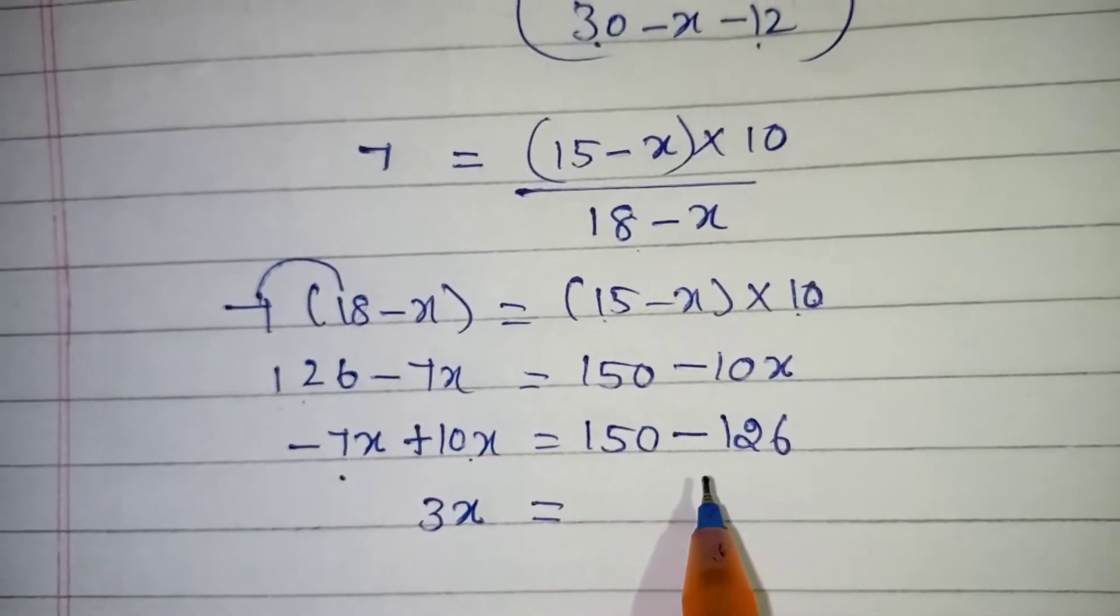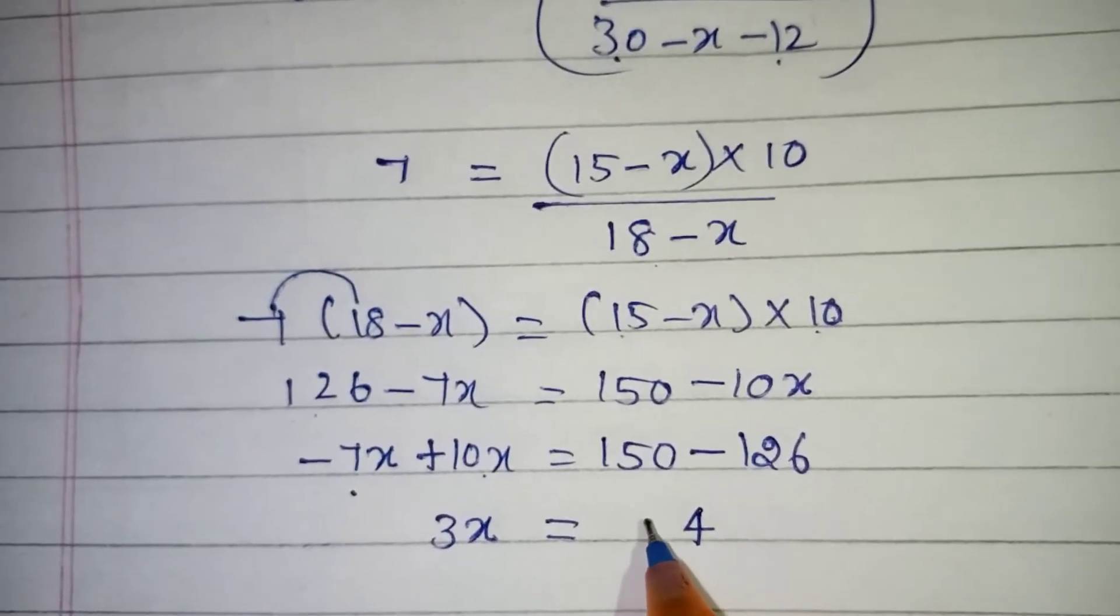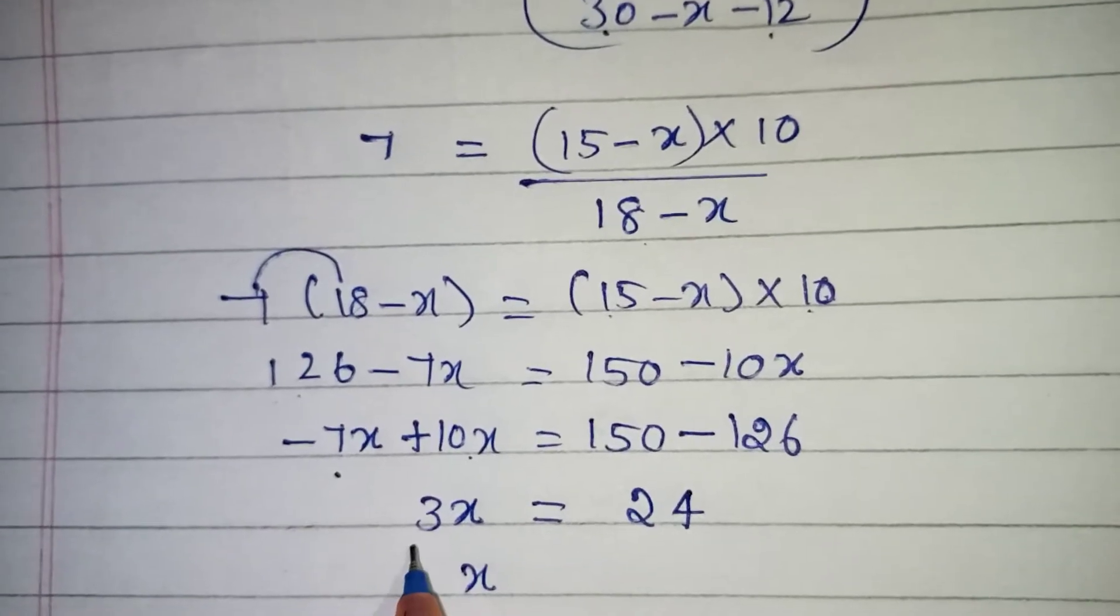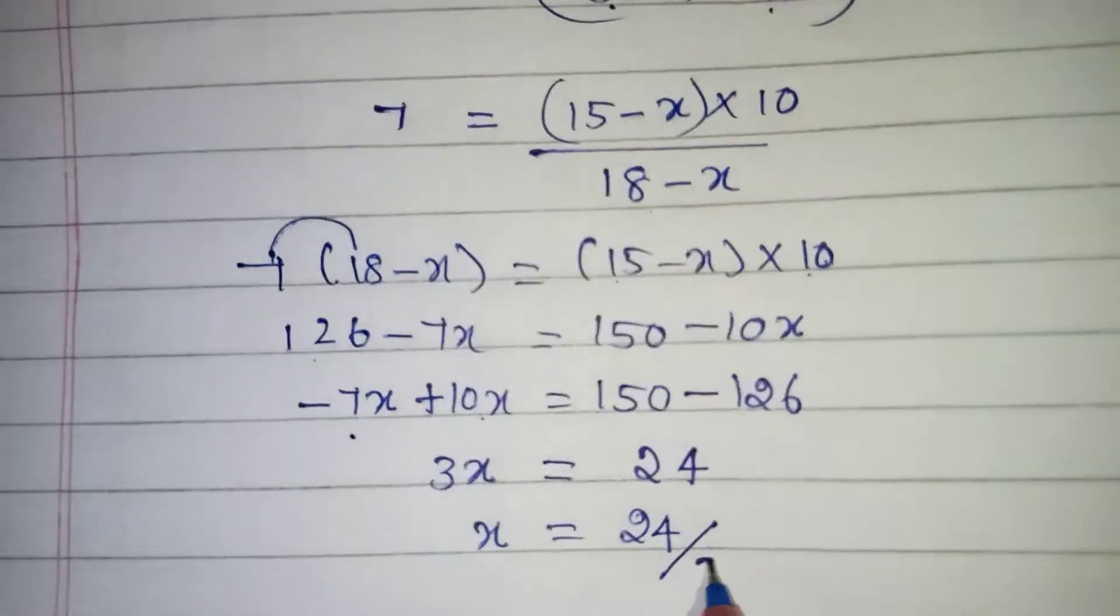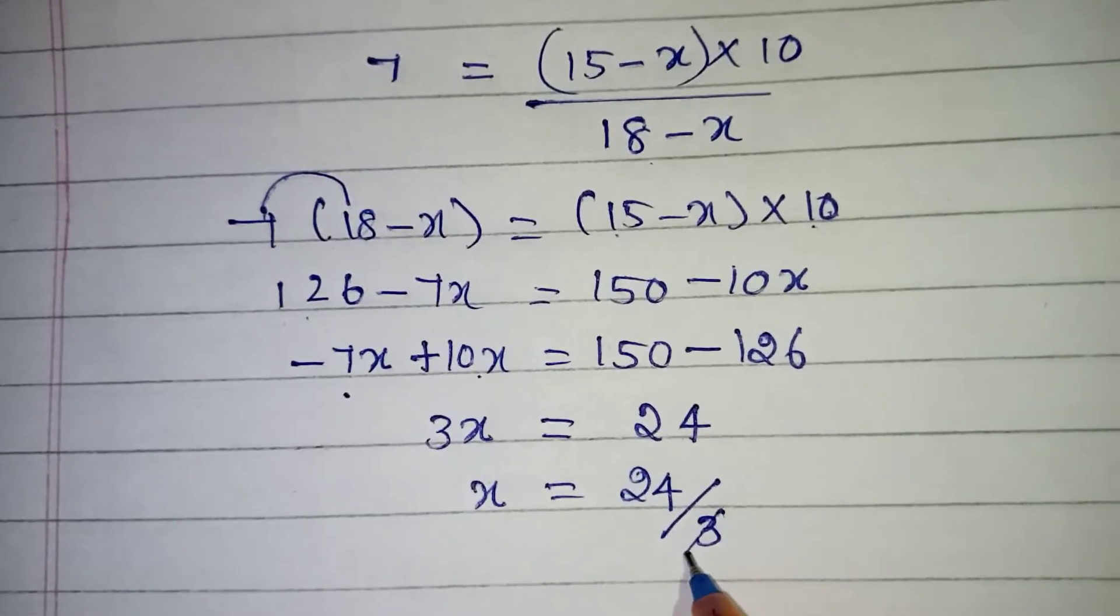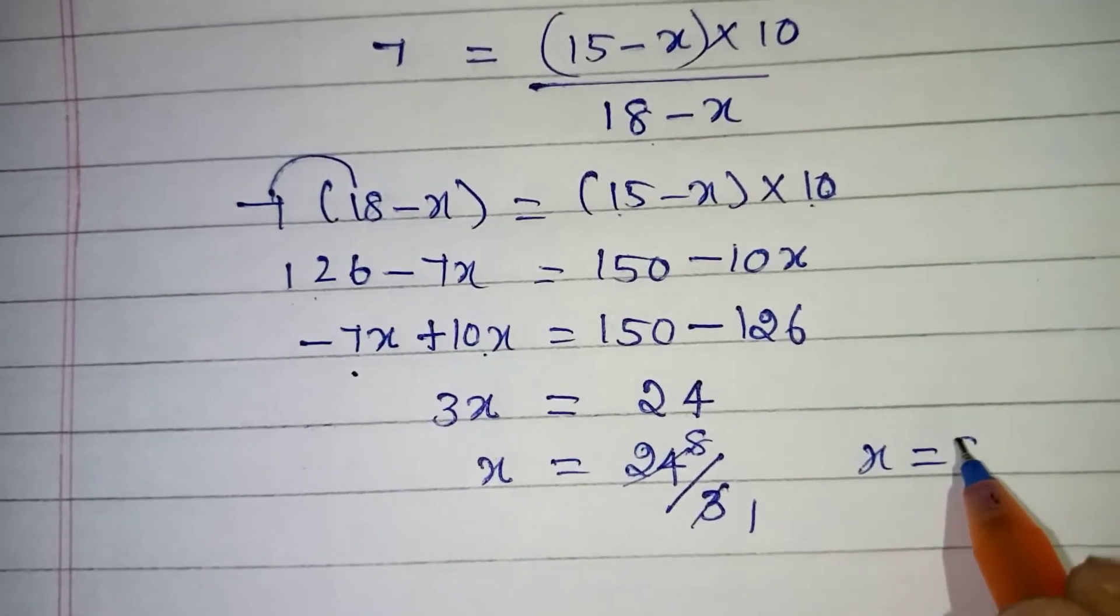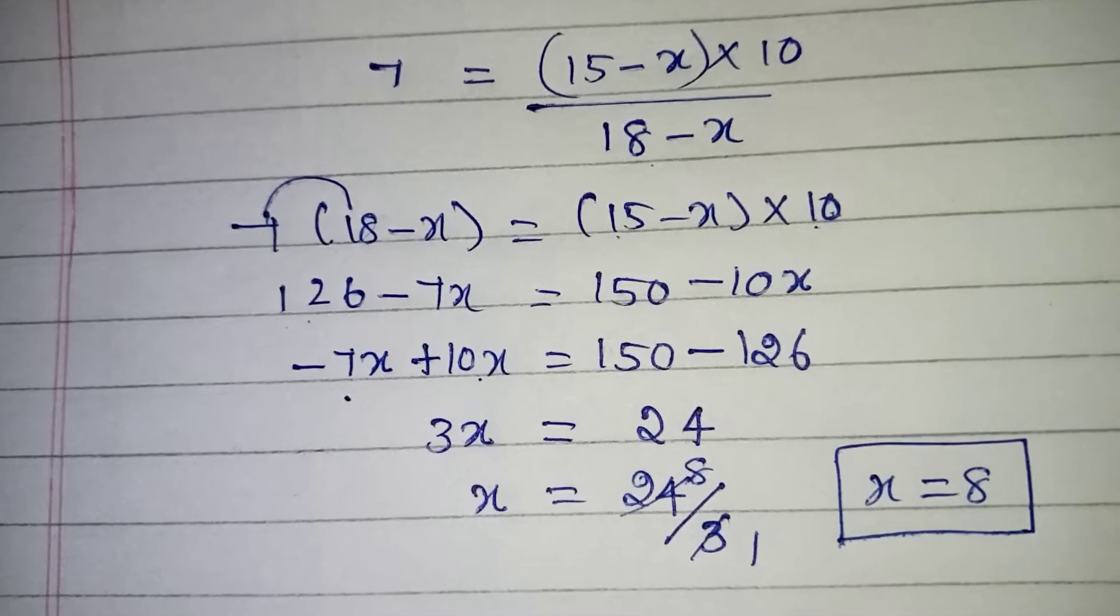Equal to 150 minus 126. So this will be 24. So 24, so X is equal to... Multiplication 3 if we take it to other side it will become division. So 24 by 3. So we can cancel by 3 table. So we can say that X is equal to 8. That is our question. Missing frequency we need to find the X value. X is 8 here.